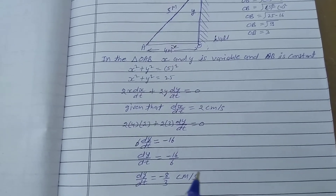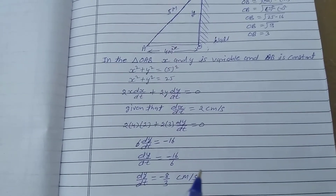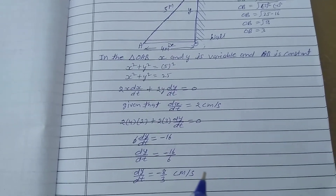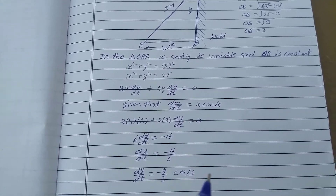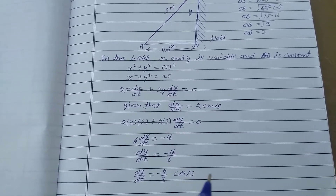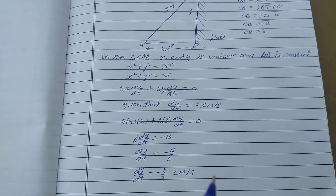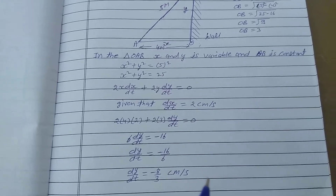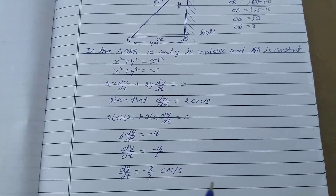This means the height of the ladder on the wall is decreasing at a rate of 8/3 cm per second. That is the solution to the question.